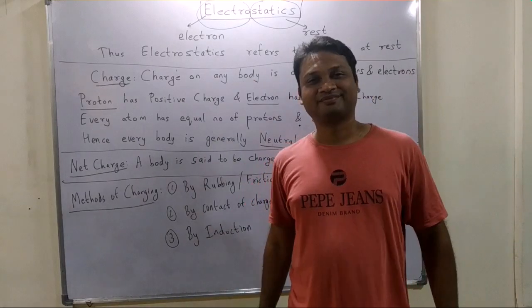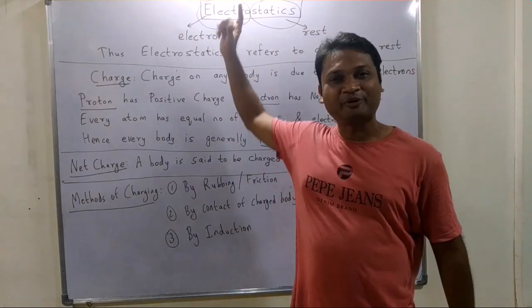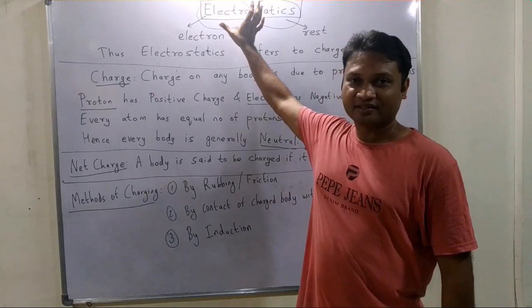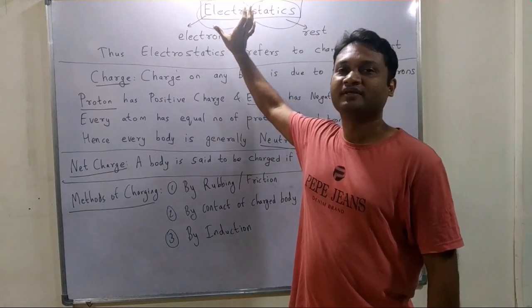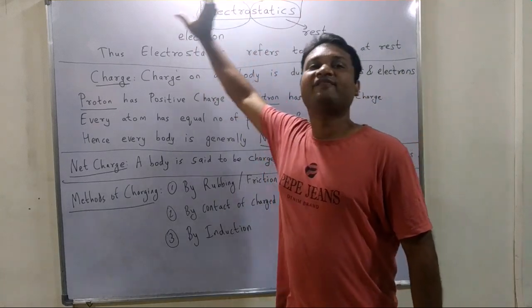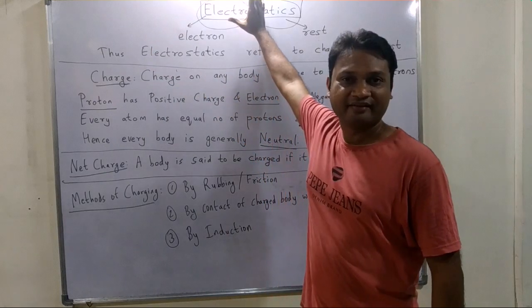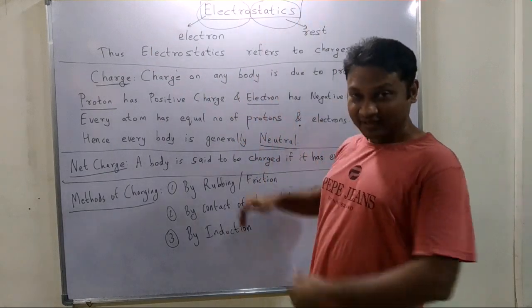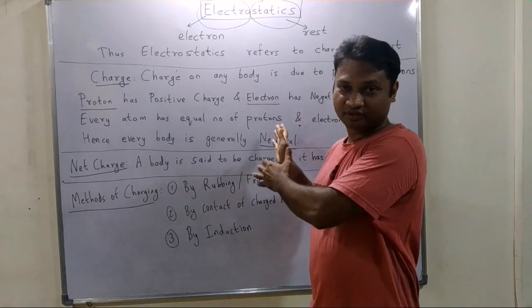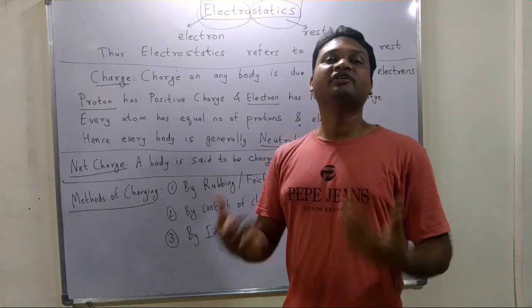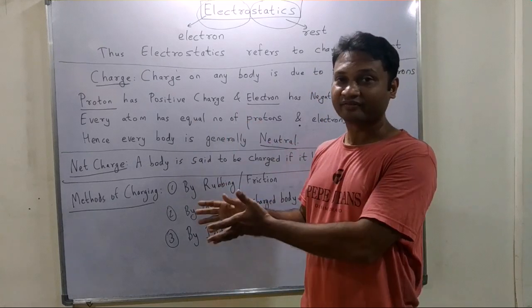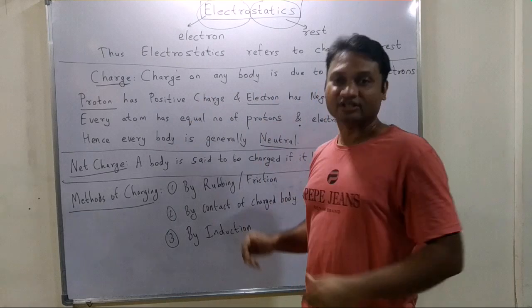Hello, and welcome to today's topic: electrostatics. The word electrostatics can be broken into two parts — electro and statics. Electro refers to electrons and statics refers to rest. Thus, electrostatics refers to electrons at rest. Since electrons carry charge, the word electrostatics means charges at rest.